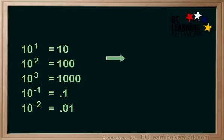As the power of 10 increases, the decimal is moved to the right. As the power of 10 decreases, the decimal is moved to the left.